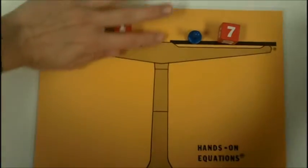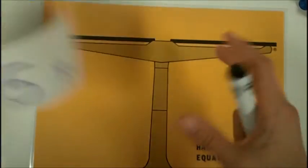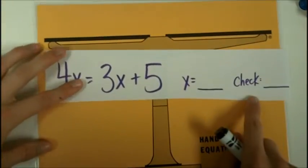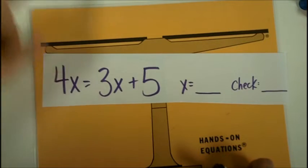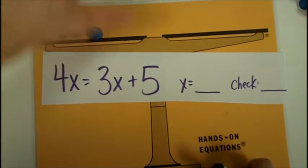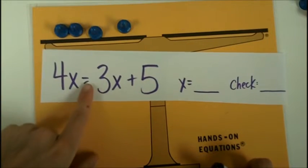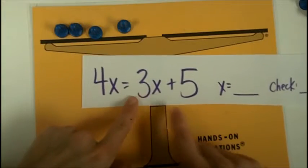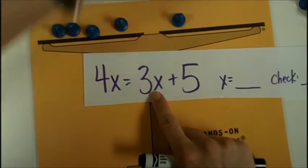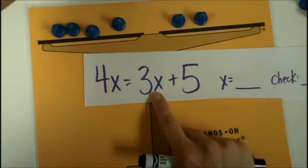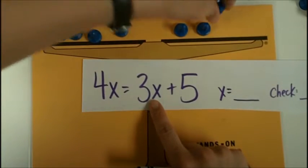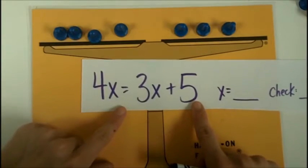Let's do one more problem. This says to put four x's on the left-hand side. One, two, three, four. Then I move over to the other side of the equal sign. I have three x's. One, two, three. And then a five number cube.